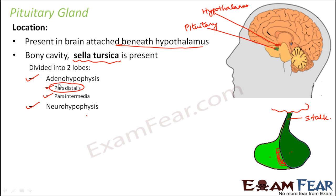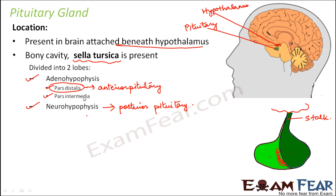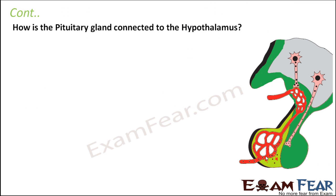In the adenohypophysis there are two parts, but one part — the pars intermedia — is not noticeable in human beings, so we can say it is essentially all pars distalis. This pars distalis, because of its location, is also known as the anterior pituitary. The neurohypophysis is known as the posterior pituitary. The intermediate lobe is almost merged with the anterior pituitary and is not noticed separately.